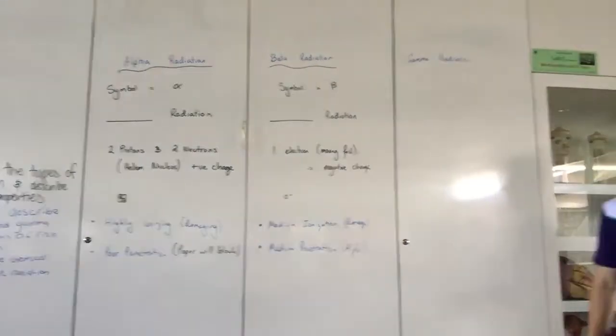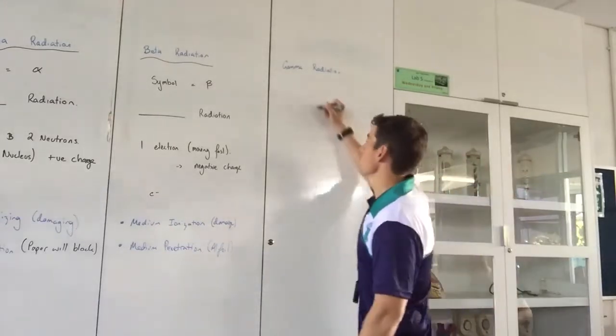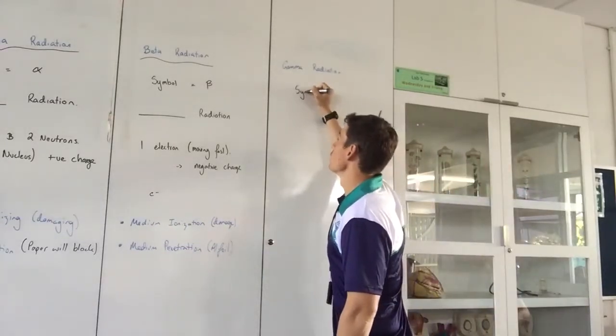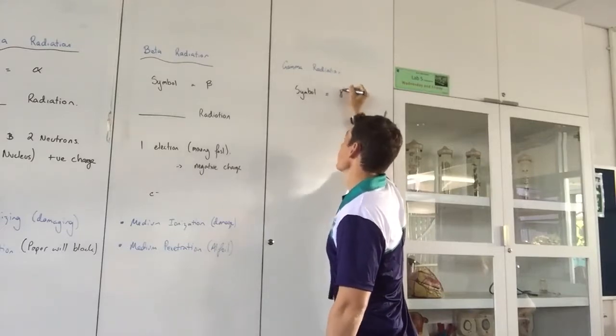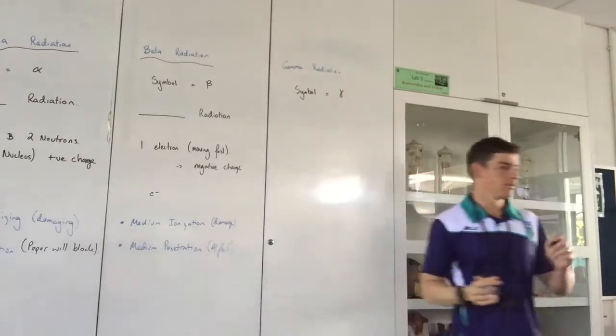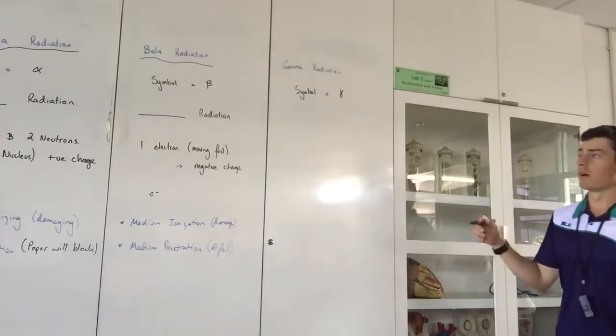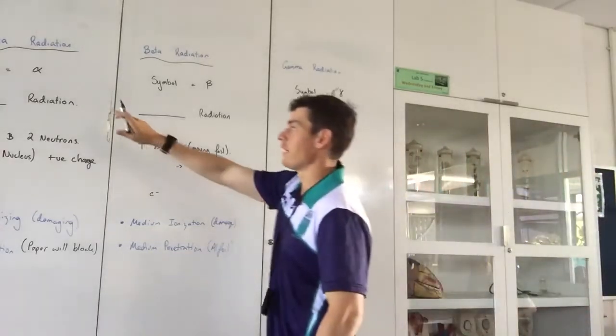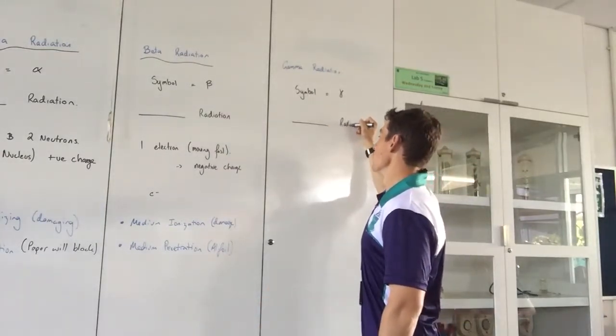And the last type of radiation that we're dealing with has the symbol for gamma again, which is like an upside down fish without a tail. A bit thinner. It doesn't look as much like an A.